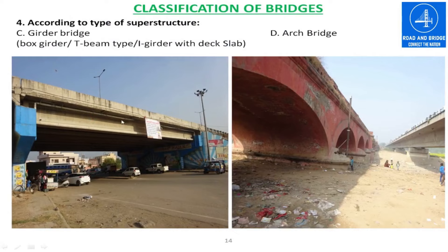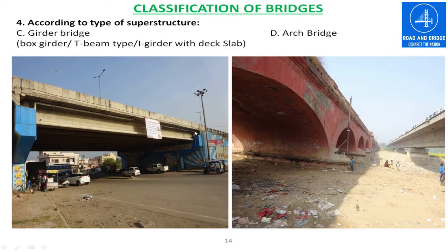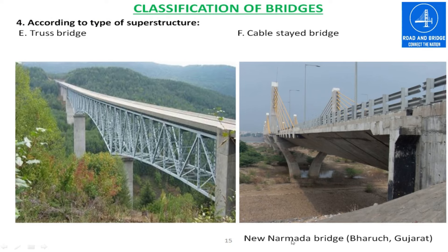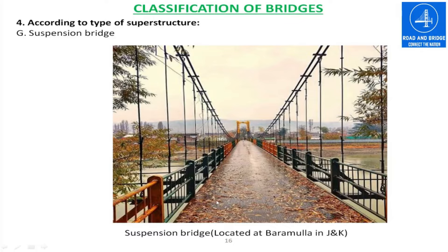This is the box girder. This is a girder bridge. Girders may be box girder, T-beam type, or I-girder. This is an arch bridge. This is a truss bridge — truss members are provided at the deck. This is the cable-stayed bridge, known as the New Narmada Bridge, located in Bharuch, Gujarat. And this is a suspension bridge, also located in Gujarat.